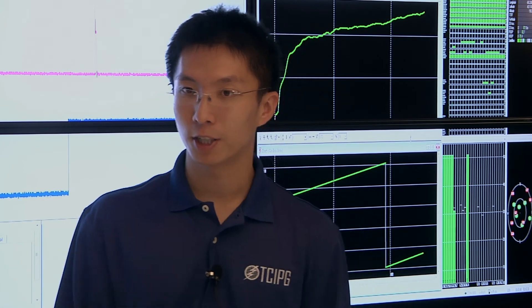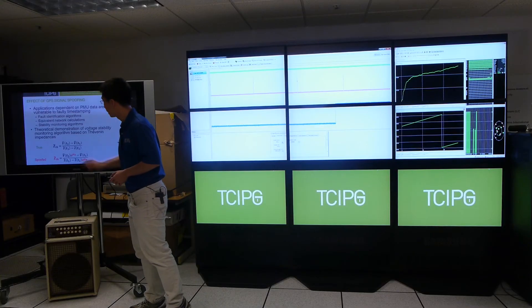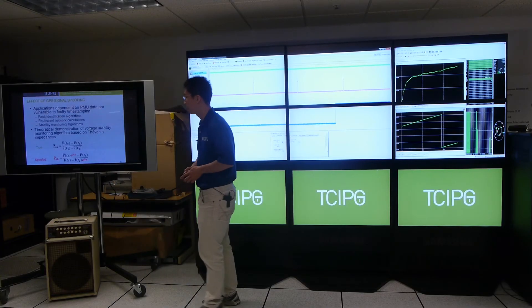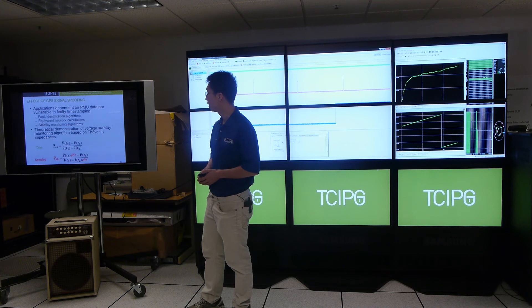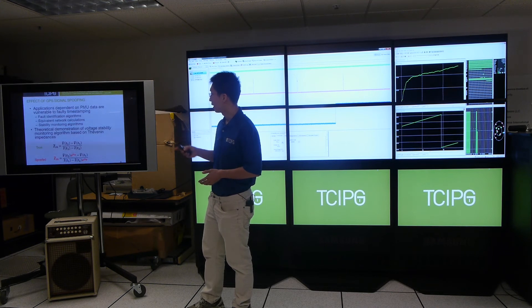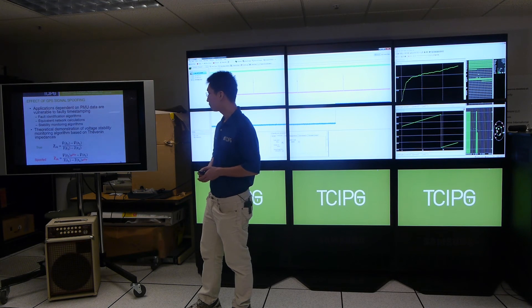Now, some of the applications that depend on PMU data include fault identification, equivalent network algorithms, and also stability monitoring algorithms. One algorithm that we looked at in particular is the voltage-stability monitoring algorithm based on Thevenin impedances. So here, you see that the true impedance is computed by taking two time instances of the PMU's measurements, the voltage and the current, and then you just basically divide the voltage difference by the current difference and the computed Thevenin impedance.